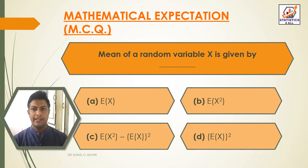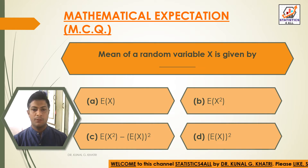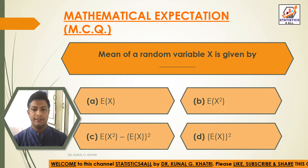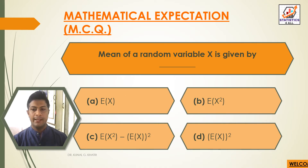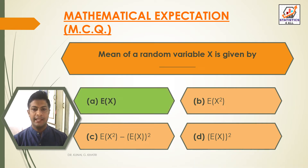Mean of a random variable x is given by: Option A — E(x); Option B — E(x square); Option C — E(x square) minus E(x) whole square; Option D — E(x) whole square. The answer is Option A: E(x). The mean of a random variable x is E(x).